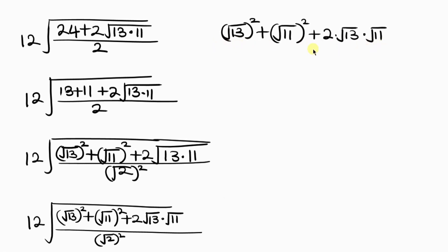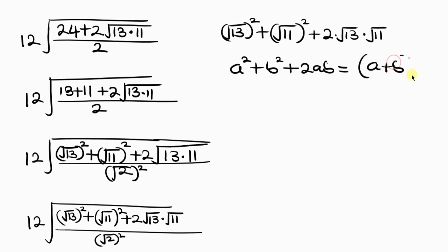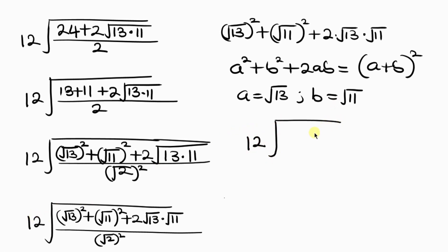This expression resembles a squared plus b squared plus 2ab, which is a perfect square written as a plus b, all squared. Comparing, we see that a equals the square root of 13 and b equals the square root of 11. So we write the numerator as the square root of 13 plus the square root of 11, all squared, over the square root of 2, all squared.